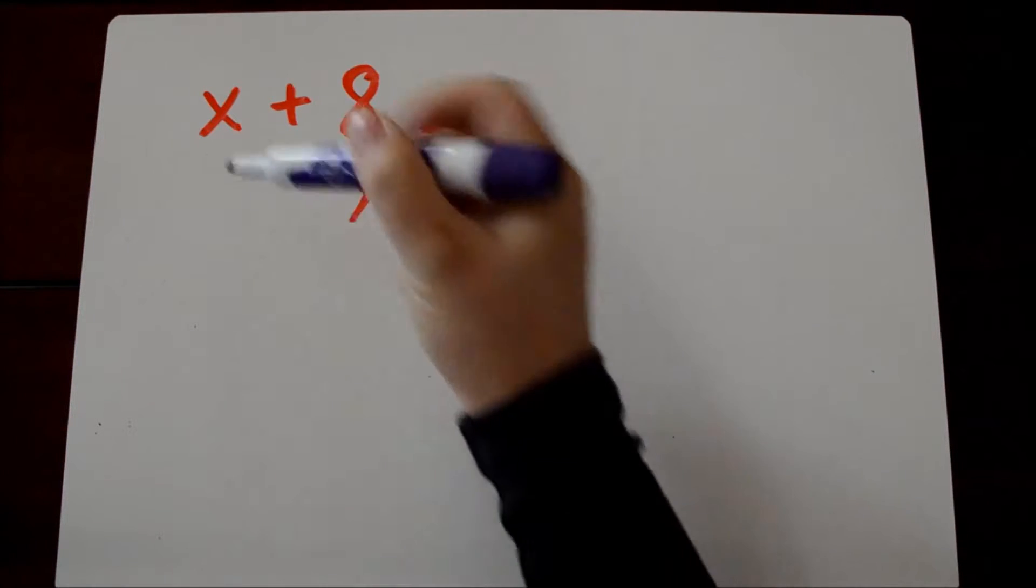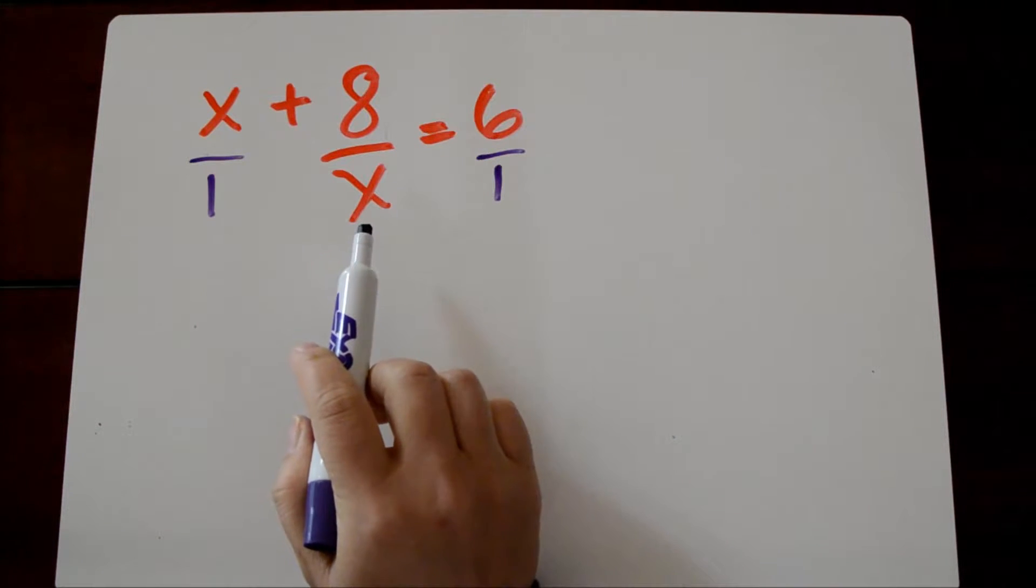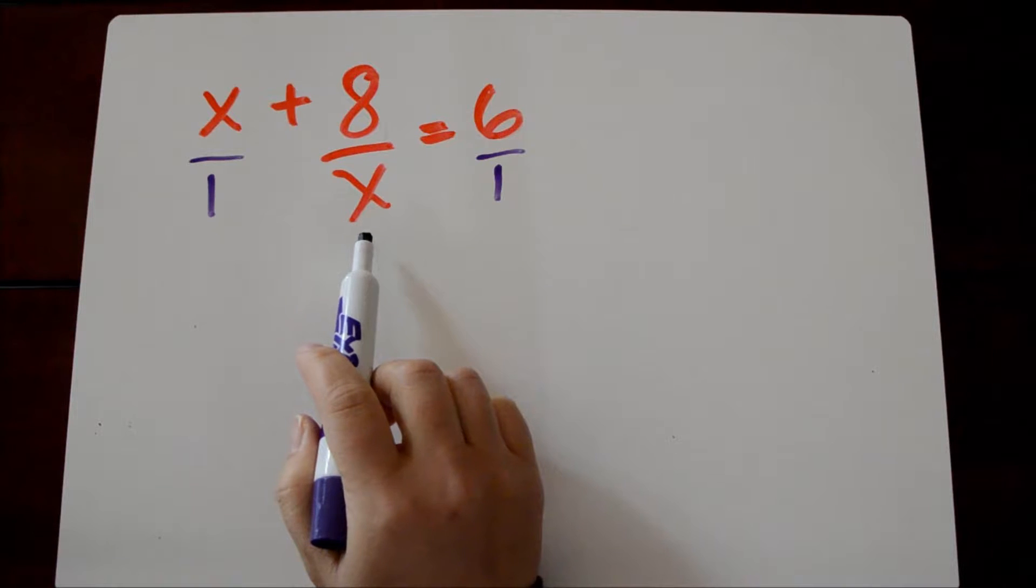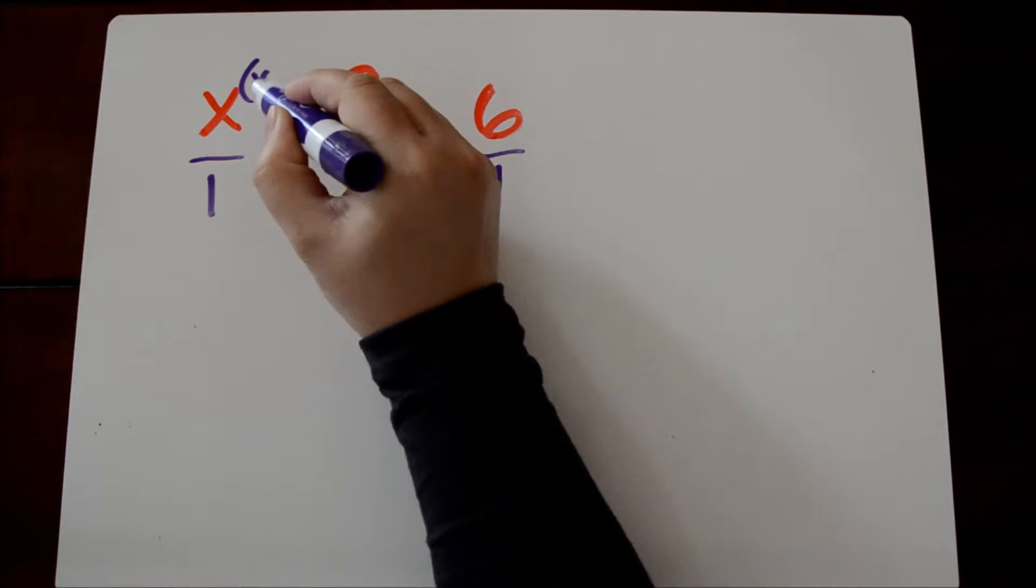So here our least common denominator is x because x is really x over 1, 6 is really 6 over 1, and all we have is an x in the denominator. So we're going to multiply the entire equation by x.